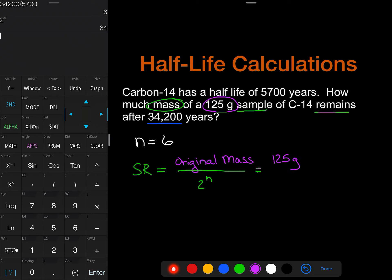which is 125 grams divided by 2 to the nth power. So let's plug in our values here so 125 grams is going to go on the top, we're going to divide that by 2 to the nth power. The nth power was 6.